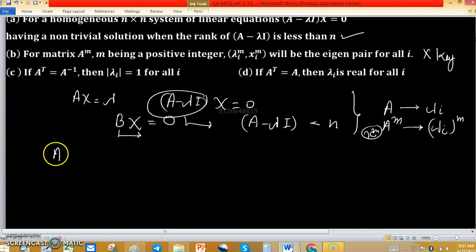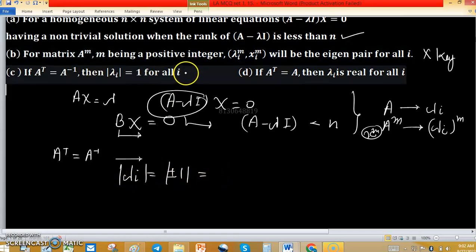Now come to the option C and D. If A transpose equals to A inverse, this is the condition for orthogonal matrices and we all know the absolute value of eigenvalue of orthogonal matrices is always 1. Because eigenvalues of orthogonal matrices are plus or minus 1. So absolute value of plus 1 or minus 1 will be 1 for all eigenvalues.